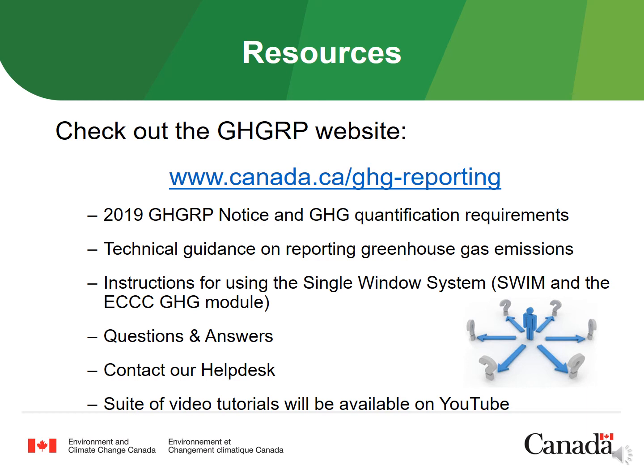To wrap up, this slide lists the resources available to help facilities complete their GHGRP report. Our website is the place to find a link to the 2019 GHGRP notice describing the latest reporting requirements, as well as the GHGRP quantification requirements document, which is mandatory for those subject to the expansion. Also available is the technical guidance document on reporting greenhouse gas emissions, a link to access the Single Window System, and guidance on using this online system to submit your report, including video tutorials on accessing Single Window for the first time, connecting your profile to an organization, managing organization information, and step-by-step instructions on submitting a GHGRP report.